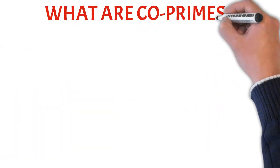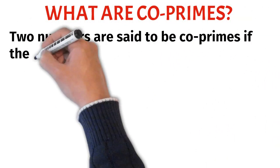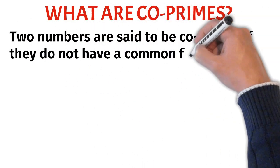What are co-primes? Two numbers are said to be co-primes if they do not have a common factor other than 1.